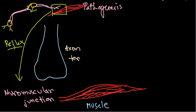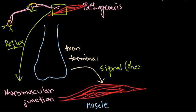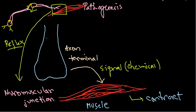Inside the axon terminal we have important chemical components that help to transfer chemical information from the axon terminal to the muscle cell, telling it to contract — providing signals in the form of chemicals. These chemicals are made from two components: choline and acetyl-CoA.